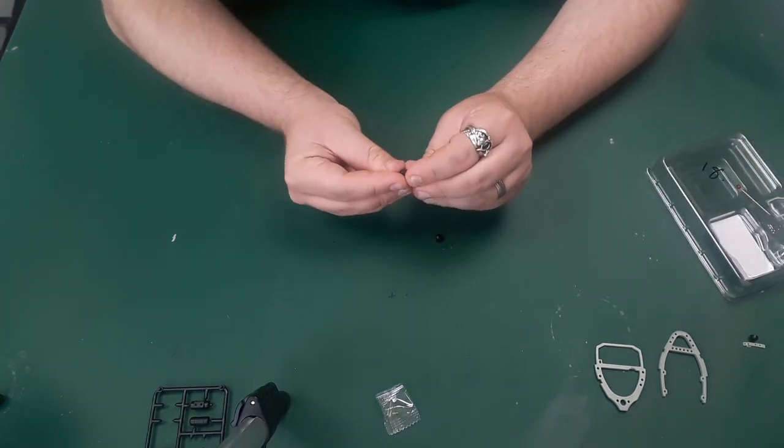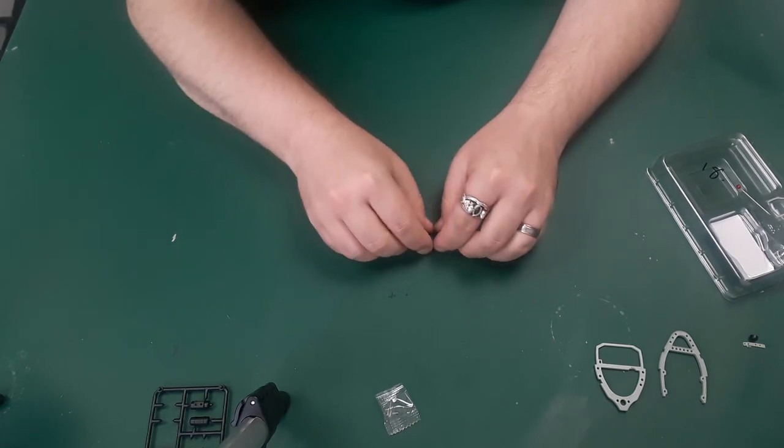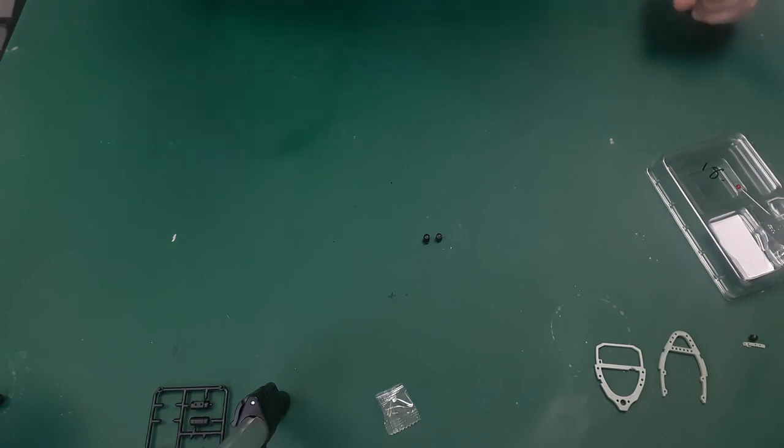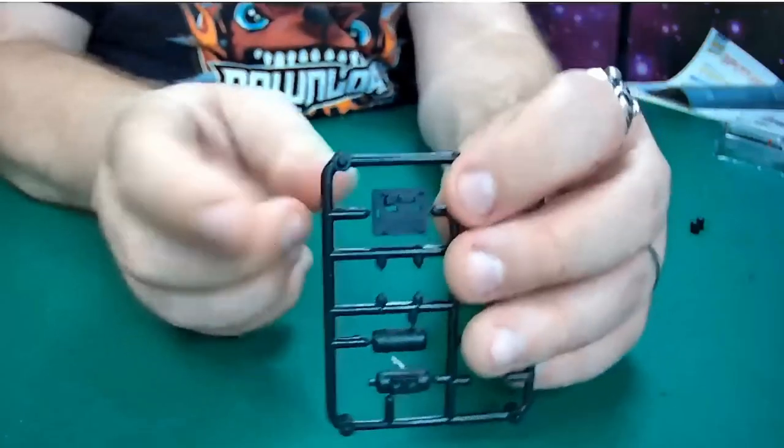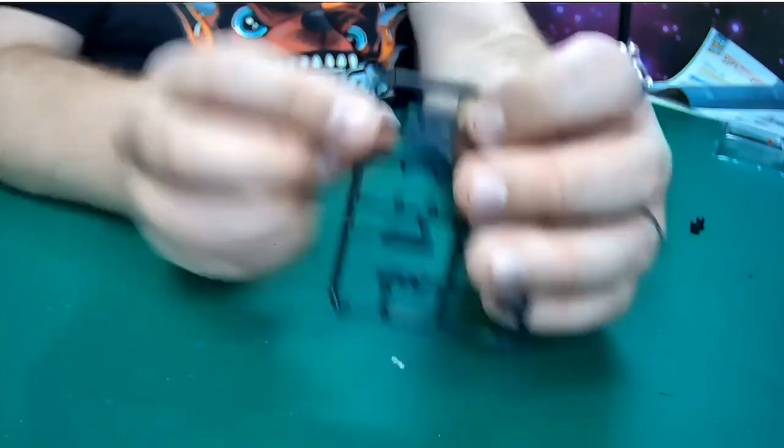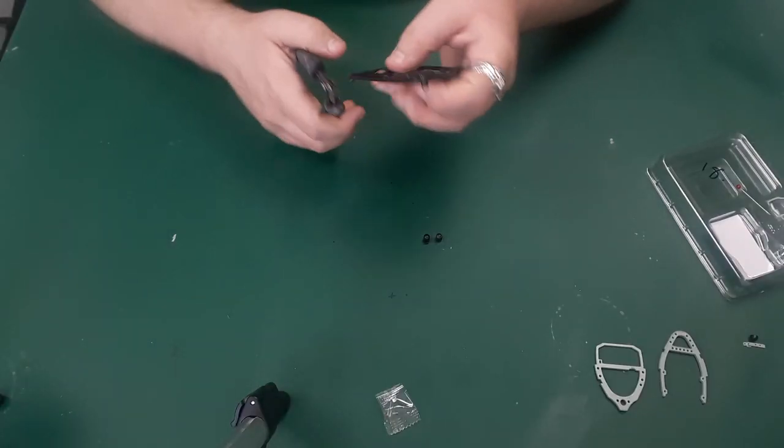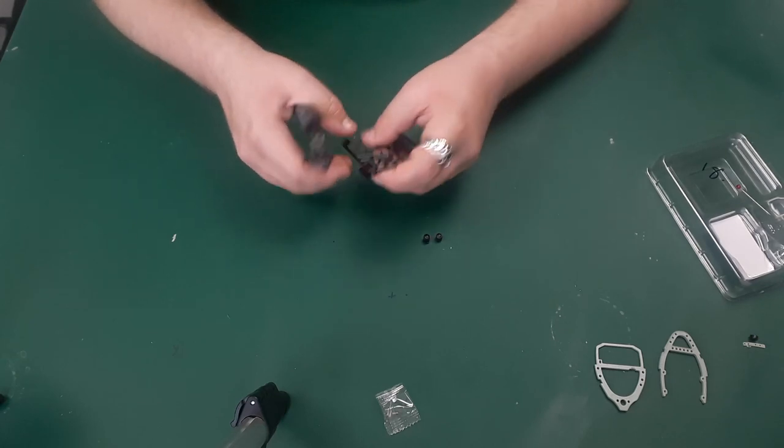So that's those two bits all attached together and glued. Now cut part C from the frame, which is this big box square thing just up at the top here, and then glue these two parts that we've just done onto part C.